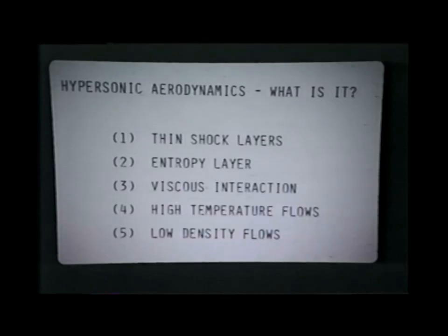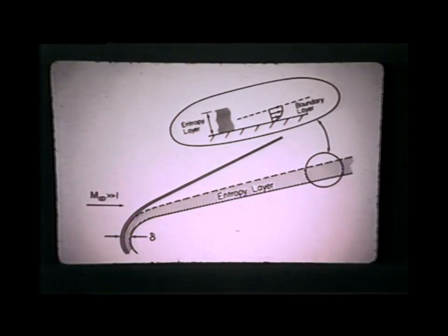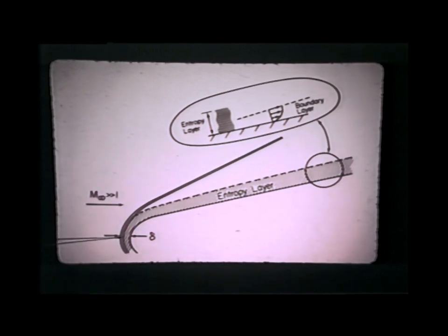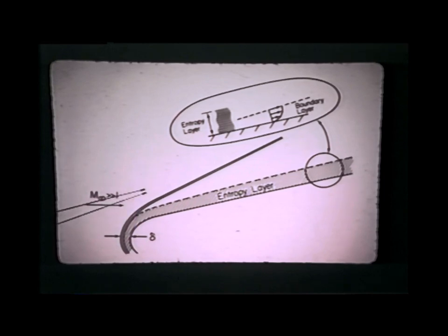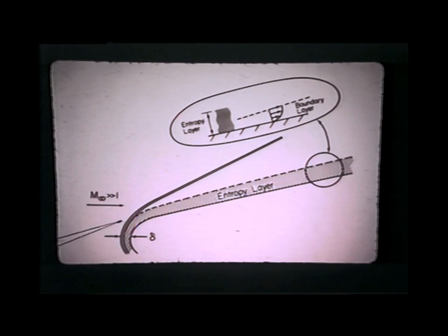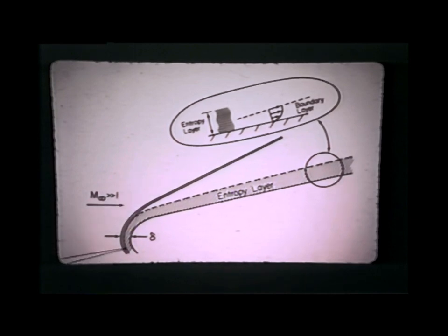Second point: the generation of something called an entropy layer. Visualize a blunt nose on that wedge. We have a strong, curved bow shock wave in front of the nose. A streamline that comes through the strong portion of the shock wave encounters a large entropy increase; a streamline through a weaker portion encounters a smaller entropy increase. The result is a region near the nose with extremely large gradients in entropy. This region flows downstream and wets the surface of the body, and the boundary layer along the surface grows within that entropy layer—causing physical and theoretical interactions that must be taken into account. This is a major characteristic of hypersonic flow.